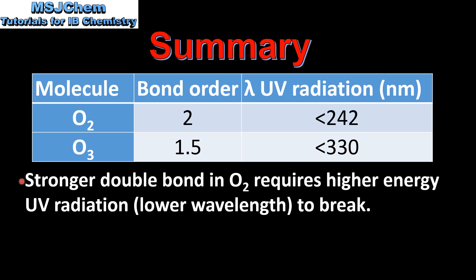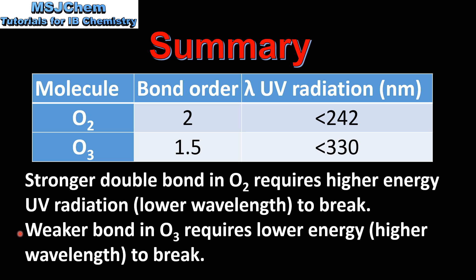The stronger double bond in molecular oxygen O2 requires higher energy UV radiation, meaning lower wavelength, to break. The weaker bond in ozone requires lower energy, so that's higher wavelength, to break. To summarize: the oxygen molecule requires UV radiation of less than 242 nanometers because the bond is stronger, and the ozone molecule requires UV radiation of less than 330 nanometers because the bond is weaker.